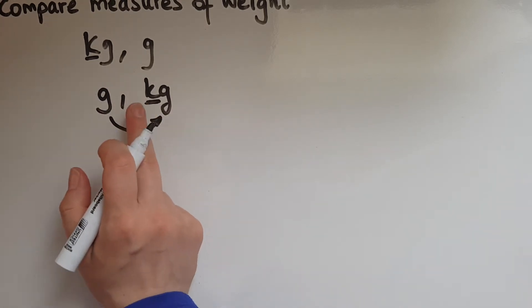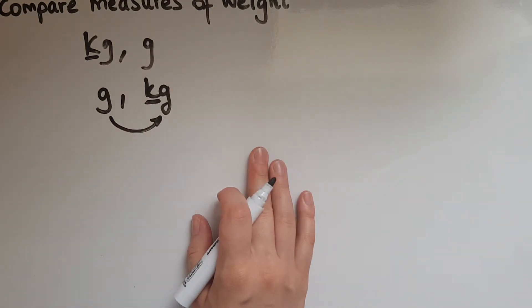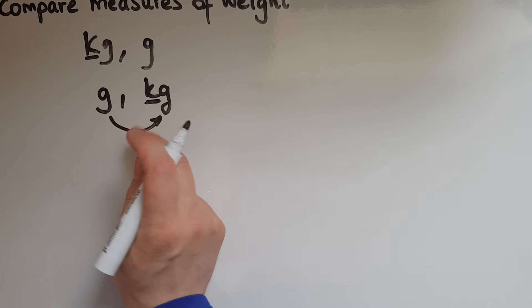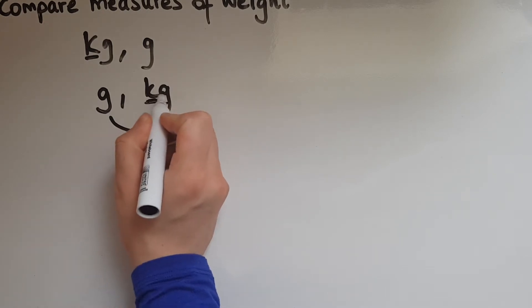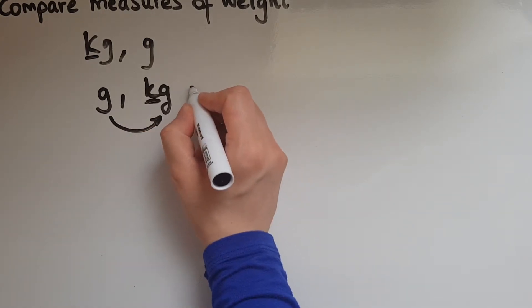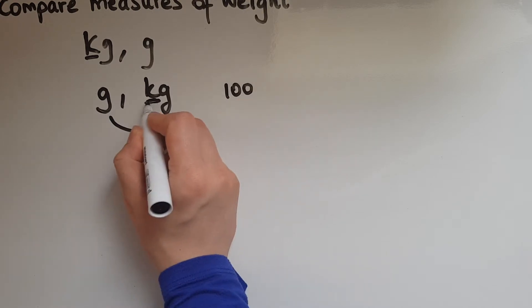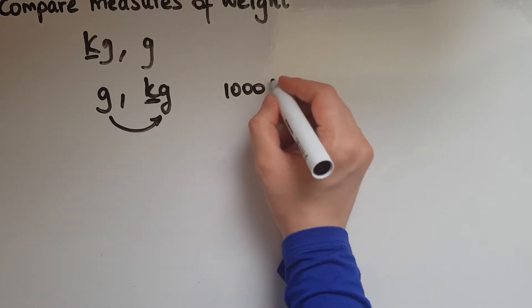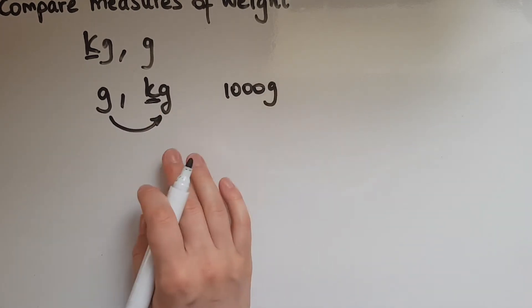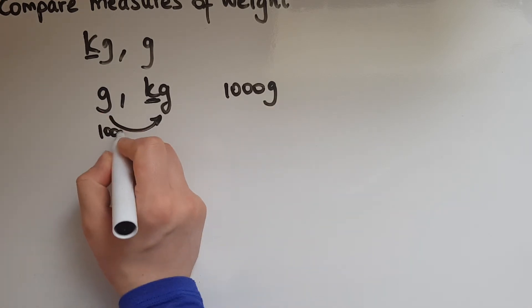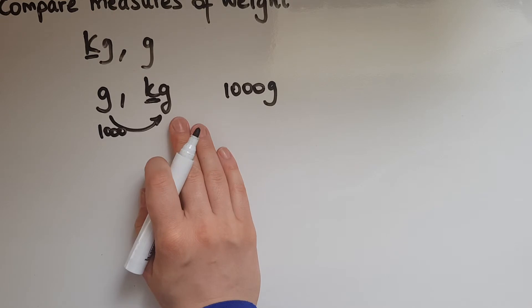As we said, the k tells us that there are a thousand - just like we say 'one k, two k.' So one kg is the same as one thousand grams; a thousand grams make one kilogram.